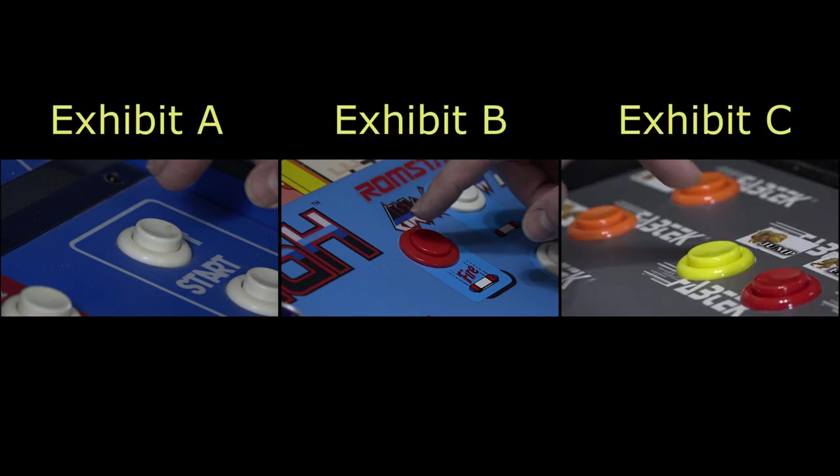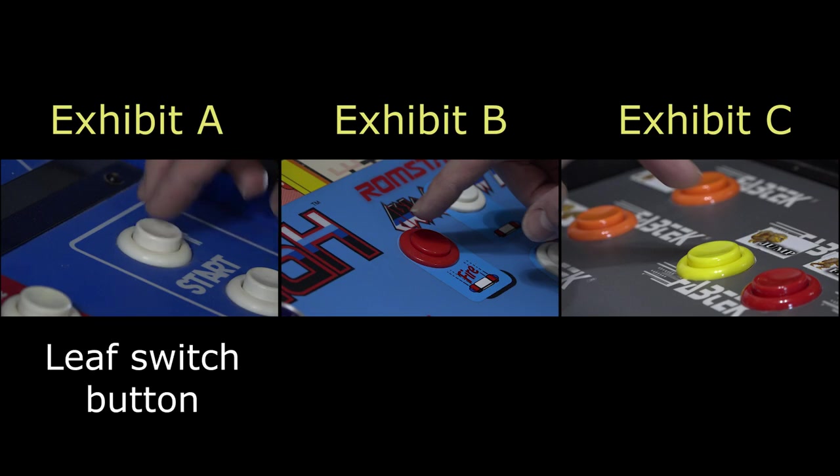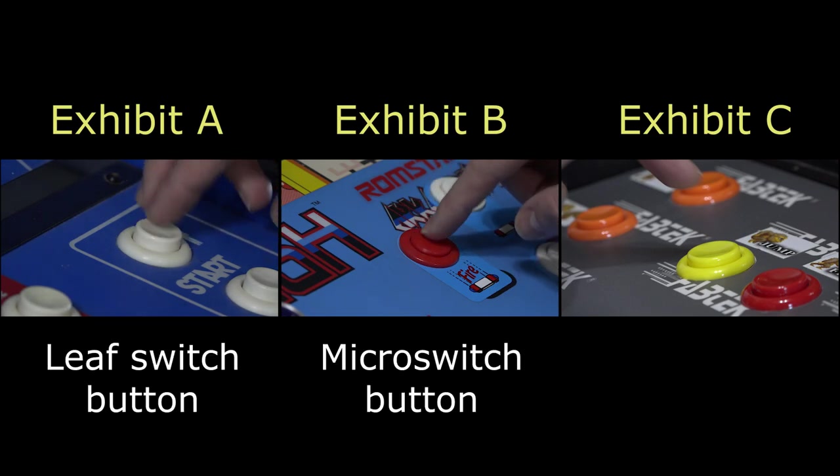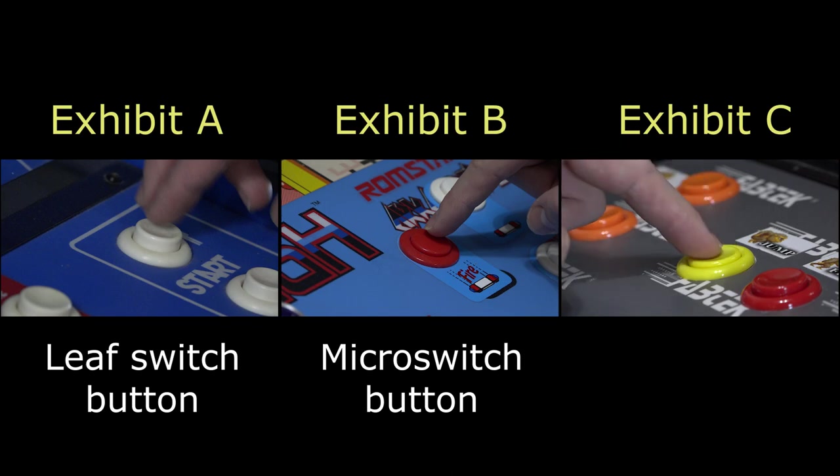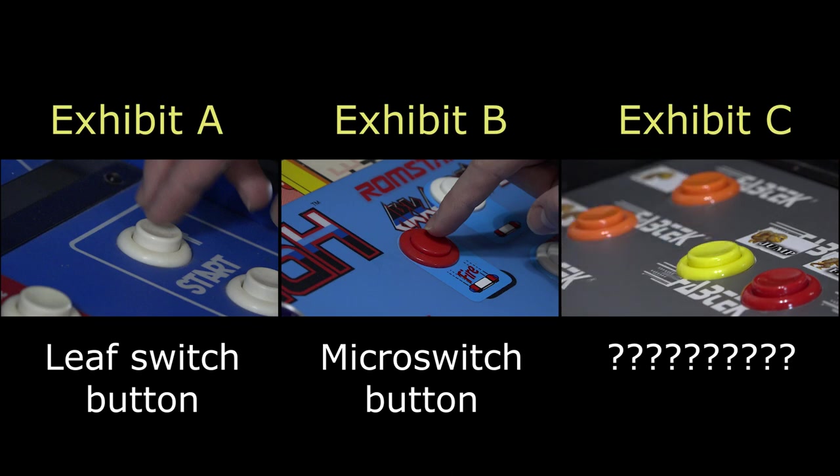So pretty simple quiz, right? If you're an arcade enthusiast or collector, you probably know all the answers to each of those buttons. So what are they? Exhibit A is your traditional leaf switch button. Exhibit B, your traditional microswitch button. Now Exhibit C, if you said it's a leaf switch button you're mostly correct but not entirely. If you said it's a microswitch button, you're not entirely wrong but you're partially correct. So how could that be? Well, that button in Exhibit C actually uses what's called a Raleigh leaf switch, and I'll get into that in a second.